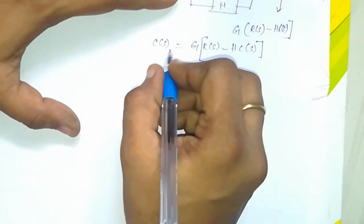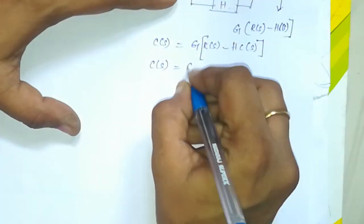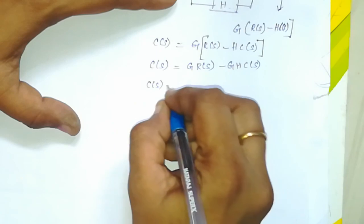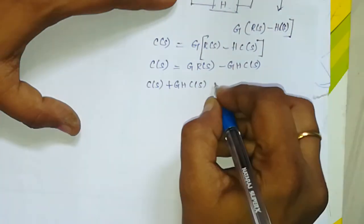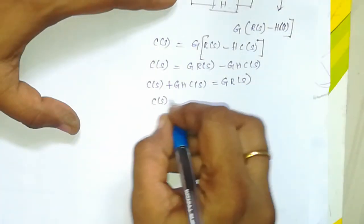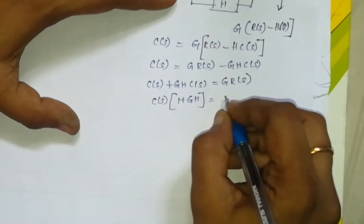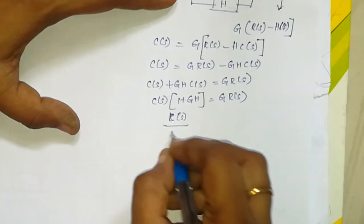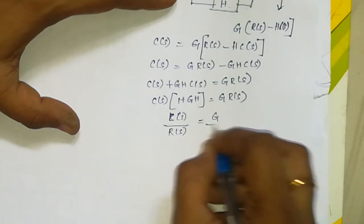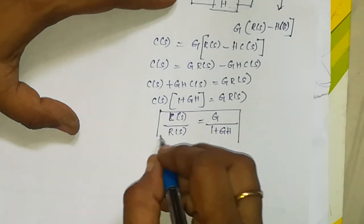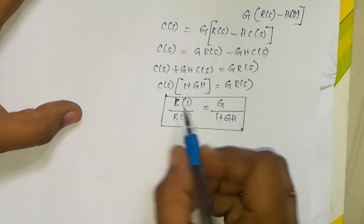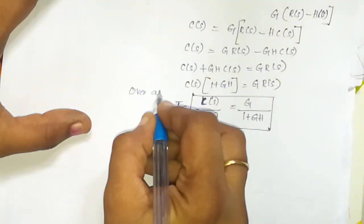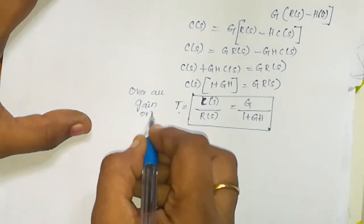So C of S equals G into R of S minus G H into C of S. Therefore C of S plus G H into C of S equals G into R of S. So C of S divided by R of S equals G divided by one plus G H. This equation gives us the overall transfer function T, where T equals C of S divided by R of S.